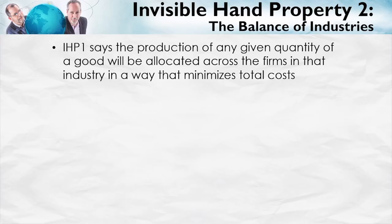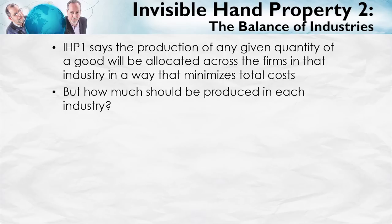But the question is, how much should be produced in each industry? Invisible Hand Property Number One says if we're producing 200 bushels of wheat, those 200 bushels will be allocated across different firms in a way that minimizes total industry costs. But should we be producing 200 bushels of wheat, or 500, or 1,000? How should wheat be compared with corn, automobiles, or books? It's this second question about how production of goods is balanced across industries that Invisible Hand Property Number Two is all about.